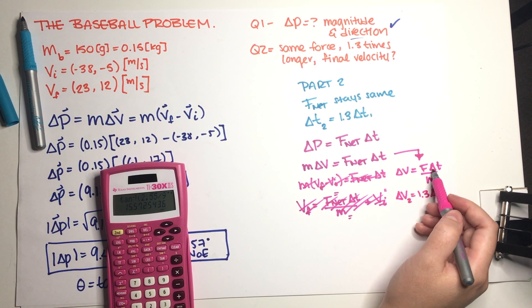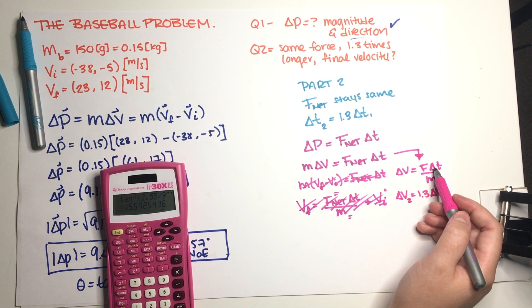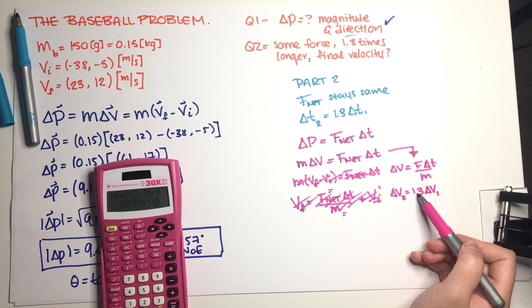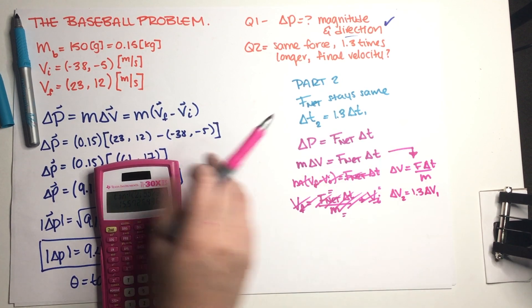Just because of this multiplier, like literally you're just multiplying times 1.3. So because you're just going to multiply this times 1.3, and we already have delta v, it's just a subtraction over here, so let's just go ahead and do it that way.